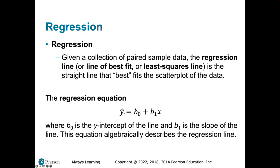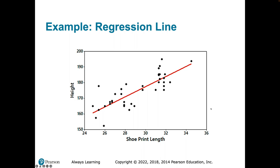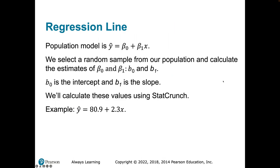In this model, Y-hat is the predicted Y. B0 is the Y-intercept, and B1 is the slope. Looking at the regression line, I can estimate the Y-intercept by seeing where it crosses the Y-axis — approximately 158 — and the slope would be positive. You could calculate the slope by picking two points, but again, you're going to plug your data into StatCrunch and it will create the slope and intercept of the regression model for you.